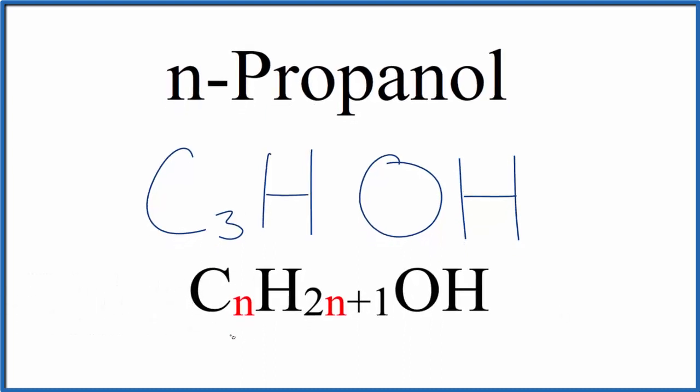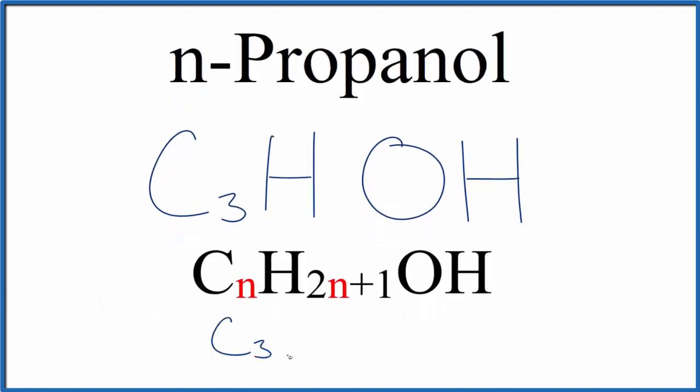So we take this number here, three, that's the n, C3H, two times three plus one, and then we put OH on the end. So two times three is six plus one, C3H7OH. That's the formula for n-propanol.